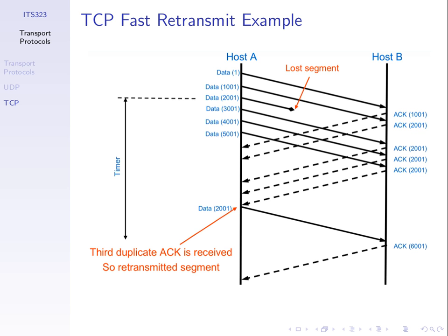That's the end of the review slides on TCP basics. So to summarize: the retransmission scheme — we send data, we can send multiple data segments, we wait for ACKs. If we receive three duplicate ACKs, retransmit. If our timer expires, retransmit. Sequence numbers count bytes, and ACK numbers indicate the next sequence number expected. Those are the main things to take from this review of TCP.